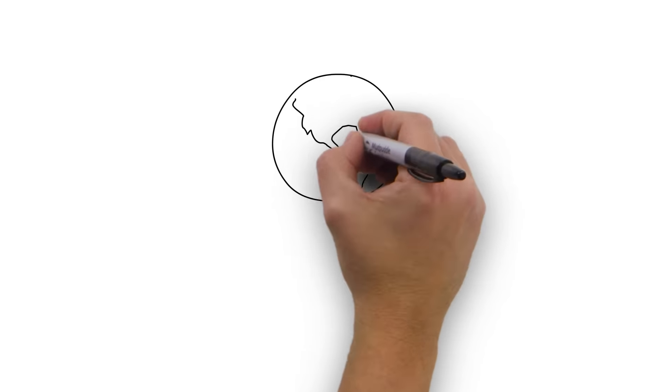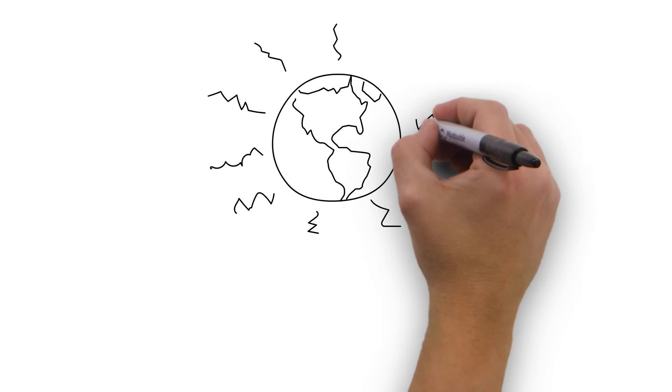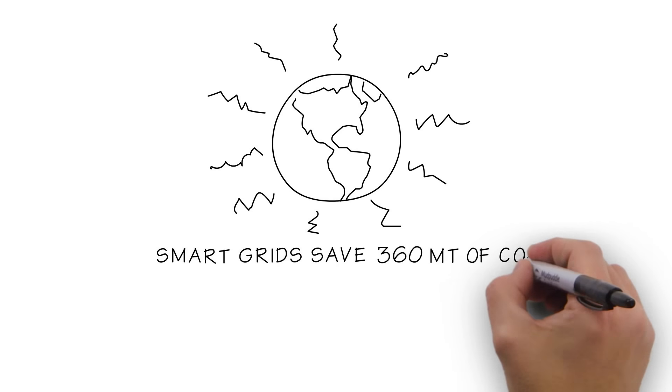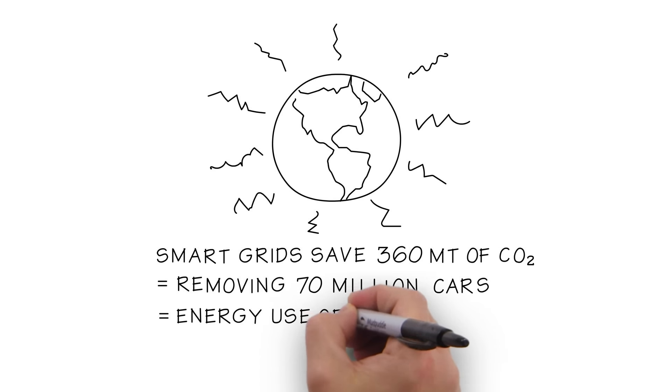Smart grids can save 360 million metric tons of greenhouse gas emissions and up to $35 billion by 2020.